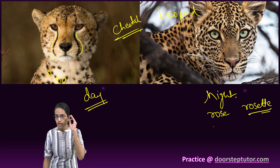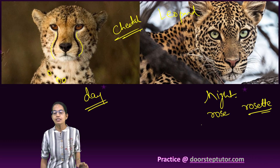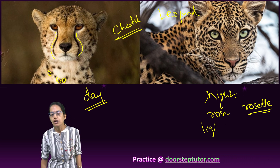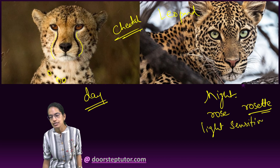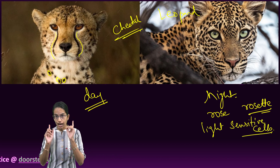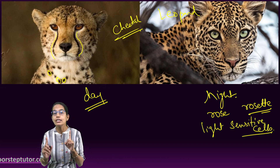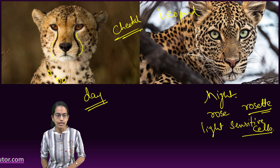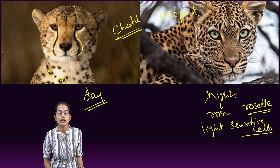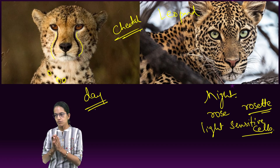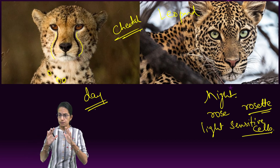The leopard has a huge number of light-sensitive cells. As a result, they can actually hunt at night. However, cheetah cannot hunt at night — that is again one of the important differences.